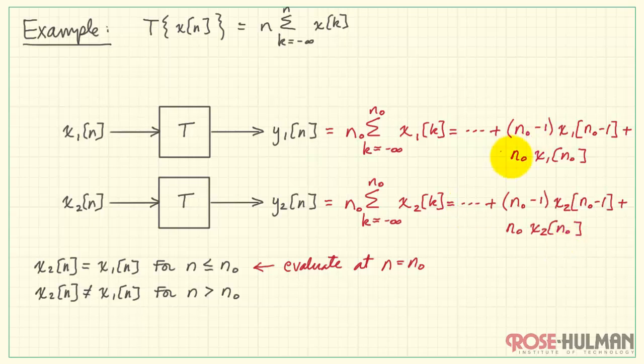On the lower track, X2 would have a similar form. So we compare these two. Are they equal for all possible choices of n naught? Well, the forms certainly look the same. And we see that as long as we are considering values below or equal to n naught, then X1 and X2 are the same.